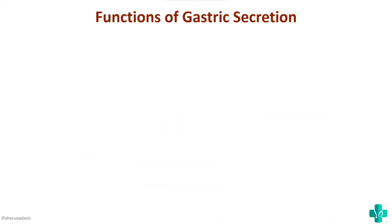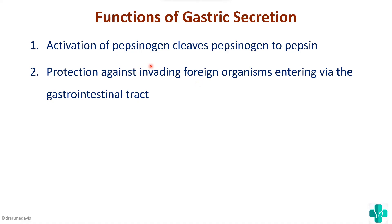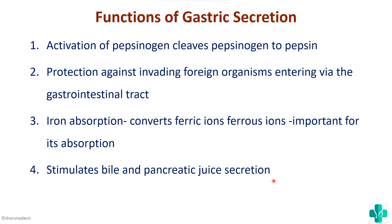The functions of gastric secretion include: pepsinogen activation to pepsin, a strong proteolytic enzyme; protection against invading foreign organisms entering via the gastrointestinal tract, making gastric acid part of innate immunity; iron absorption, since HCL provides the acidic environment needed for conversion of ferric to ferrous iron; and stimulation of bile and pancreatic juice secretion.